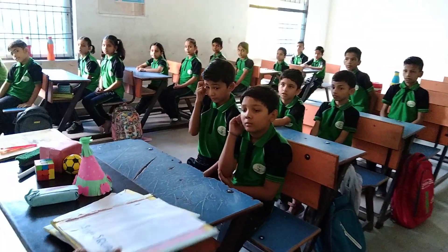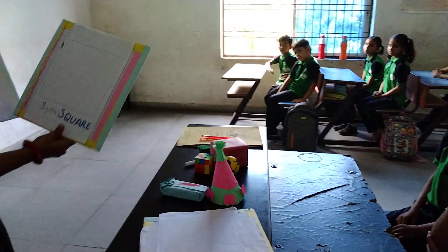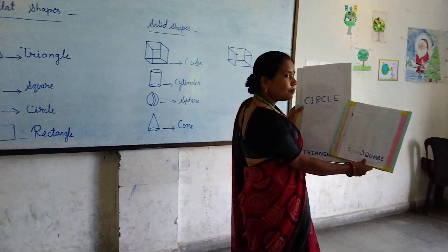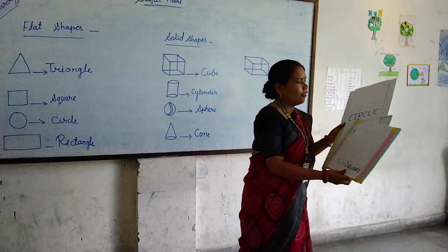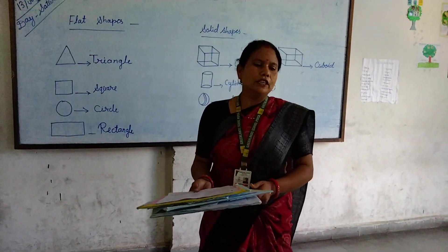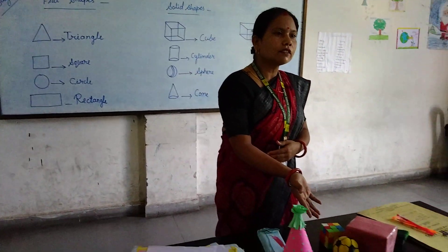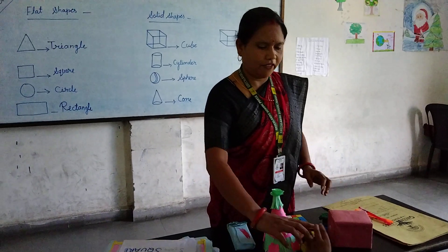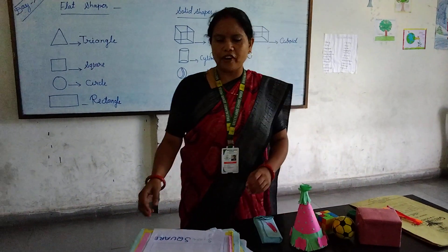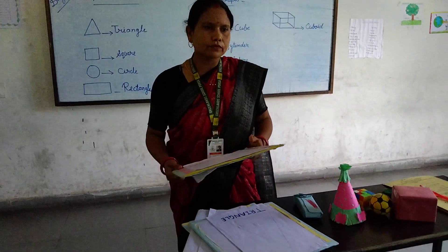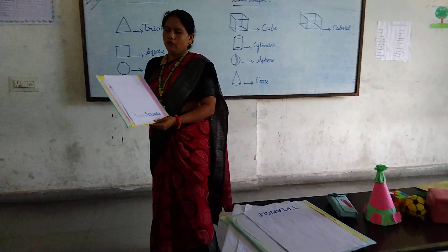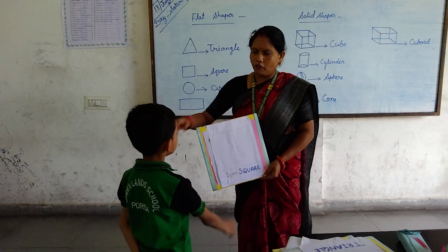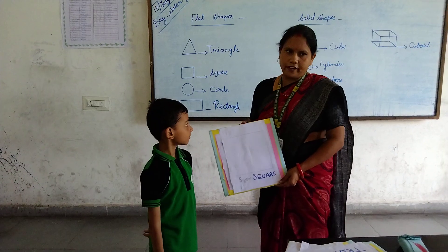Good morning, students. Which shape is this? Magic. Very good. Which shape is this? Magic. What is this? Square. What is this? Square. Very good.